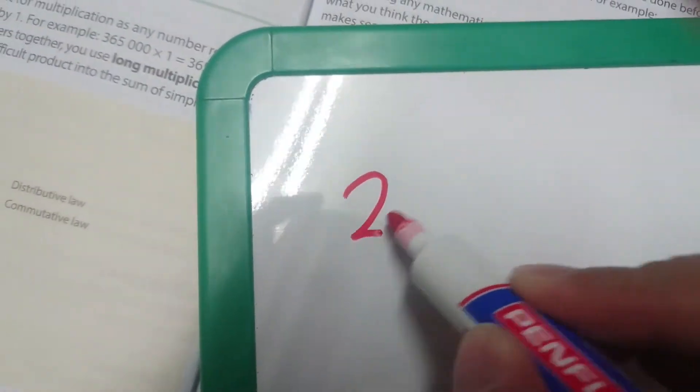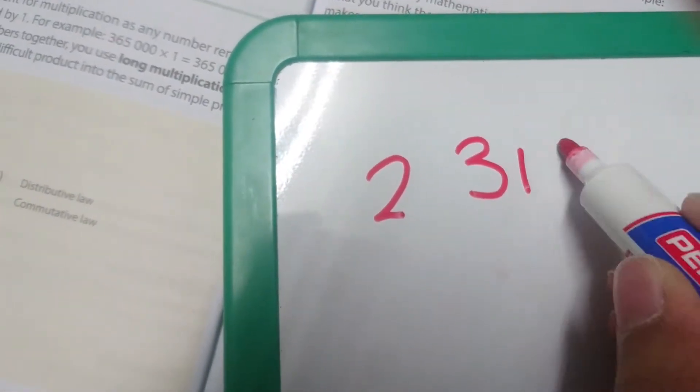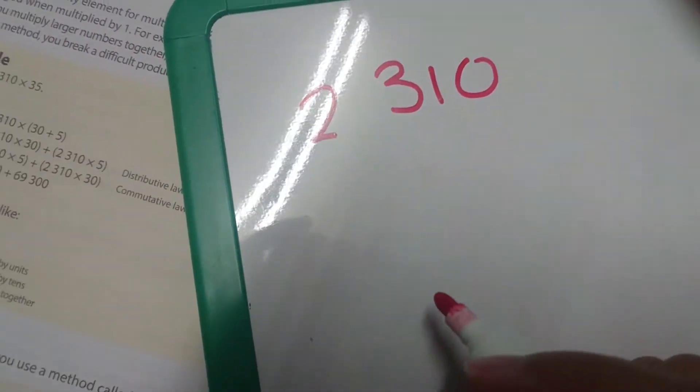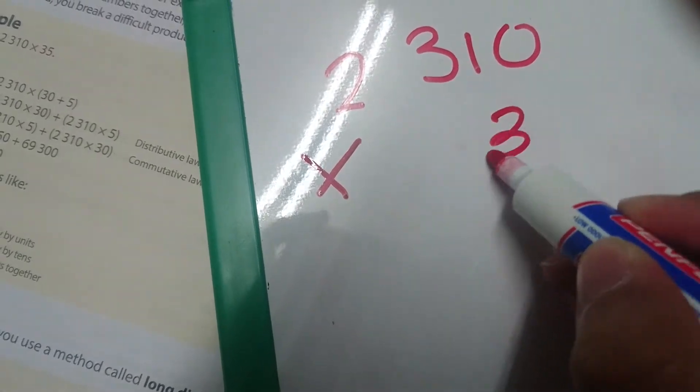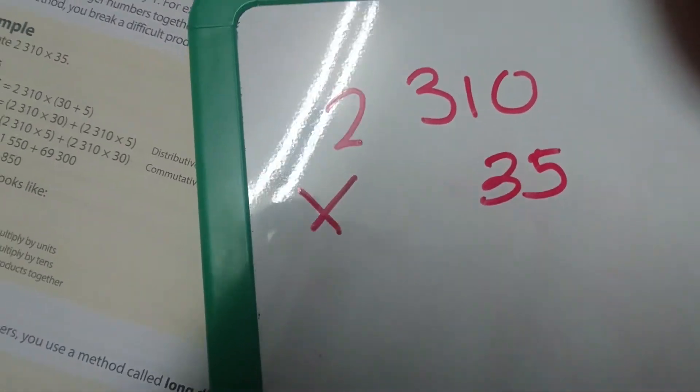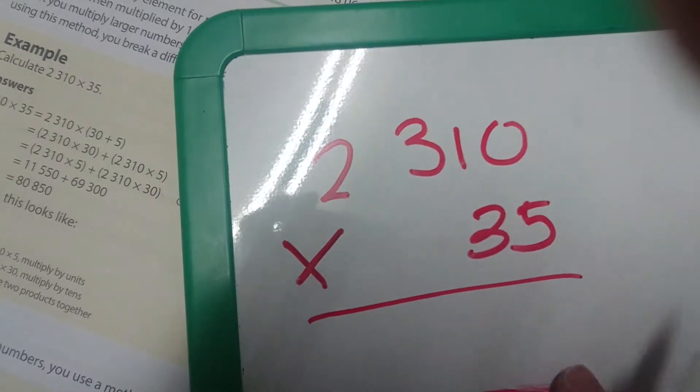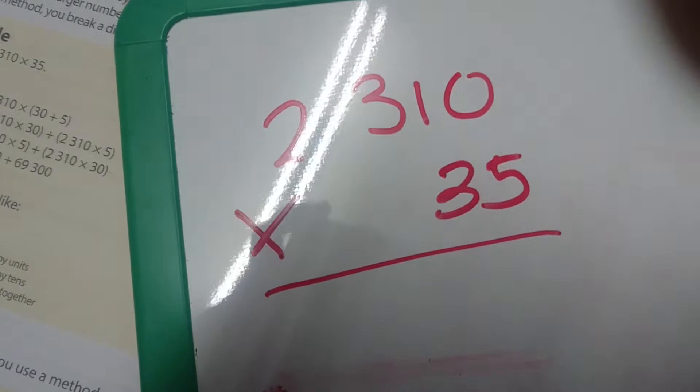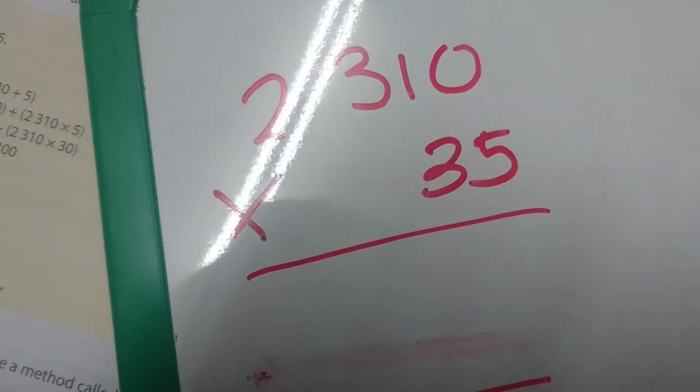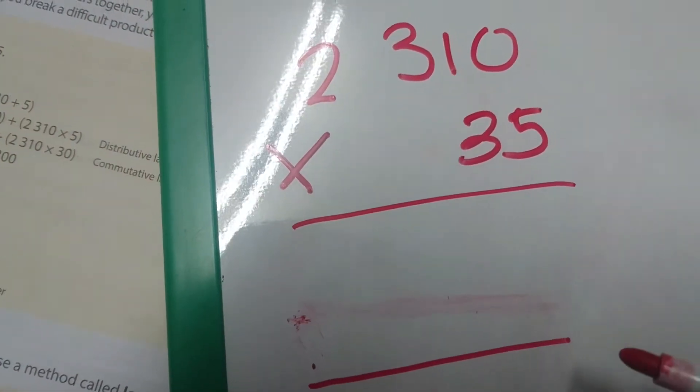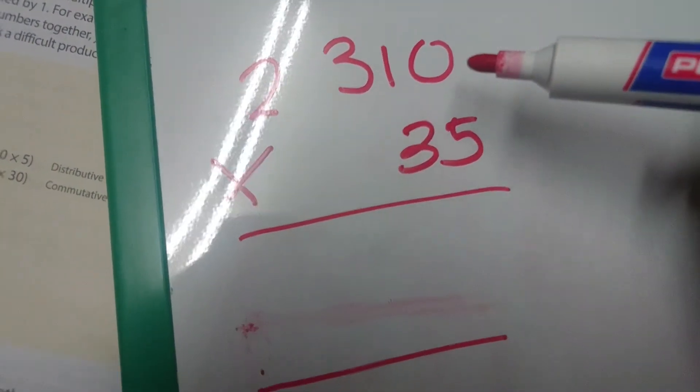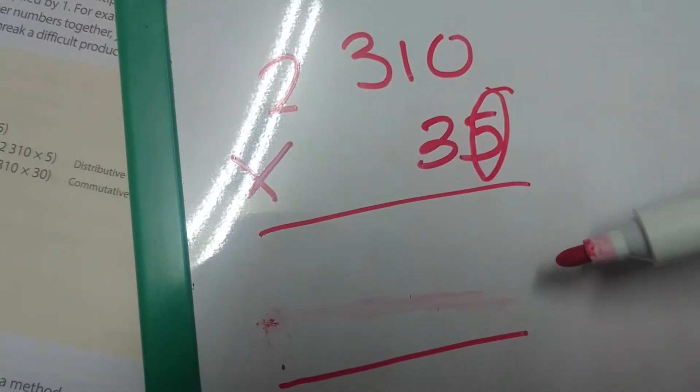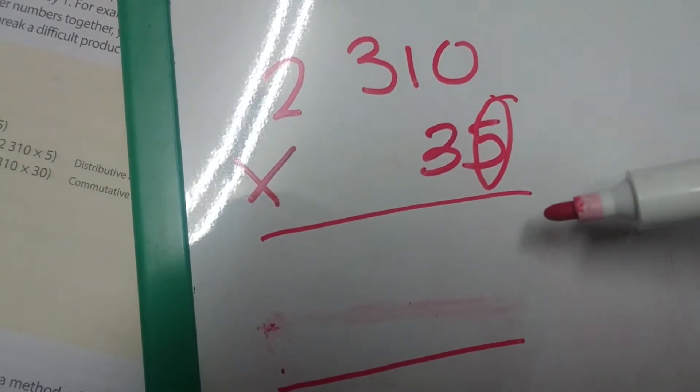The first example says 2310 times 35. Now, it is important to remember that we are going to start with the unit section. There is another method where you expand it, but I feel like the column method is much easier. So this is how we do it.